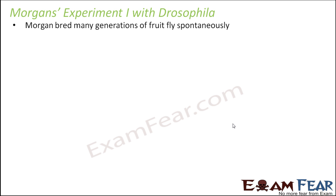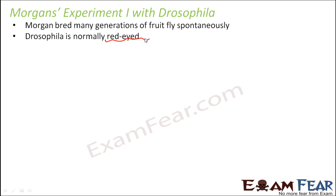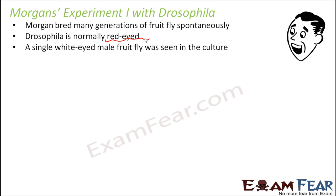He bred many generations of fruit fly spontaneously. Just as Mendel self-pollinated pea plants for several generations, Morgan similarly bred these fruit flies and observed what kind of fruit flies were being produced. Normally he found that all Drosophila were red-eyed — red eye color was the common color.